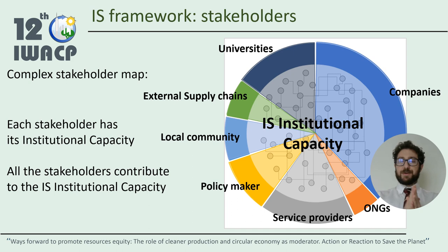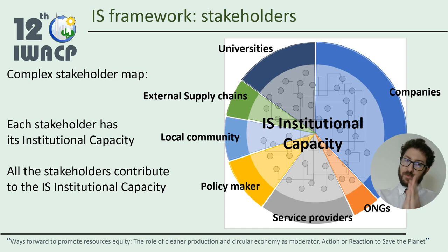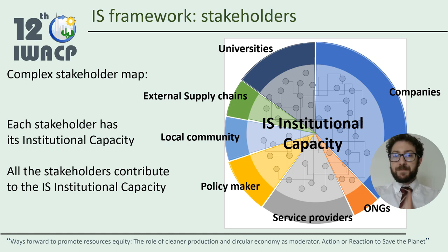Each stakeholder of the industrial symbiotic network has its own institutional capacity that contributes to the overall industrial symbiotic institutional capacity. And the industrial symbiotic institutional capacity is more than the direct sum of the institutional capacity of each single stakeholder.